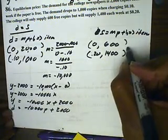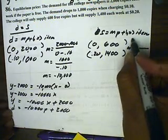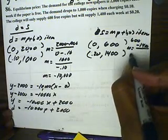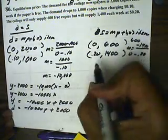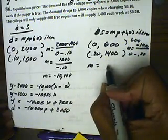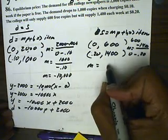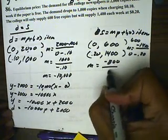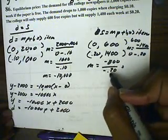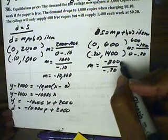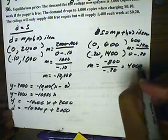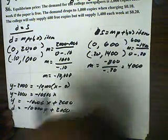So, the slope for that will be, let's see, 600 minus 1,400 and 0 minus 0.2. So, what I'm getting for slope will be, that's a negative 800 all over negative 0.20. If I move this over one time, I'll get 8,000 and then divide that by 2, 4,000. Alright, got my slope.